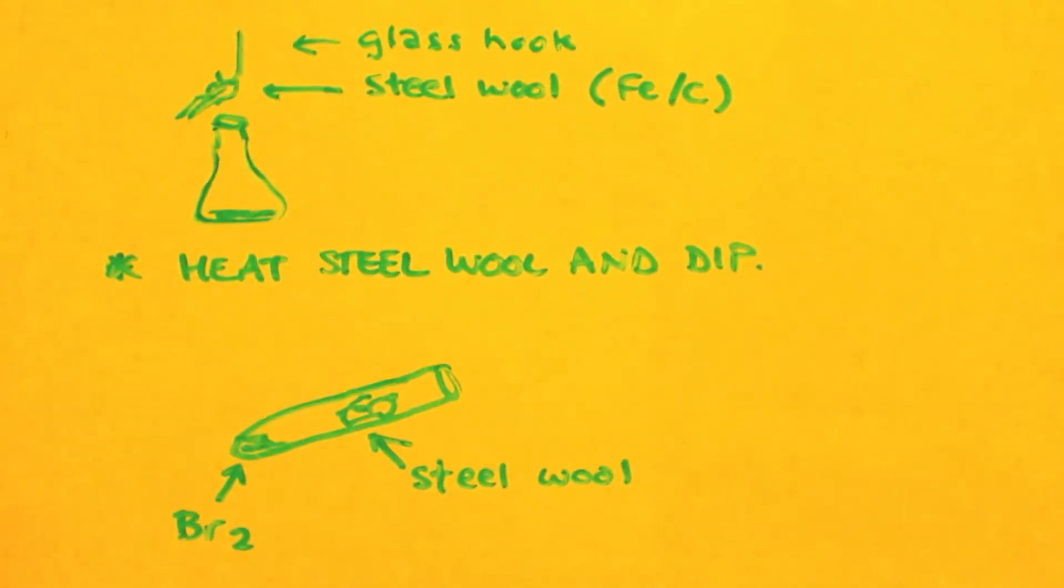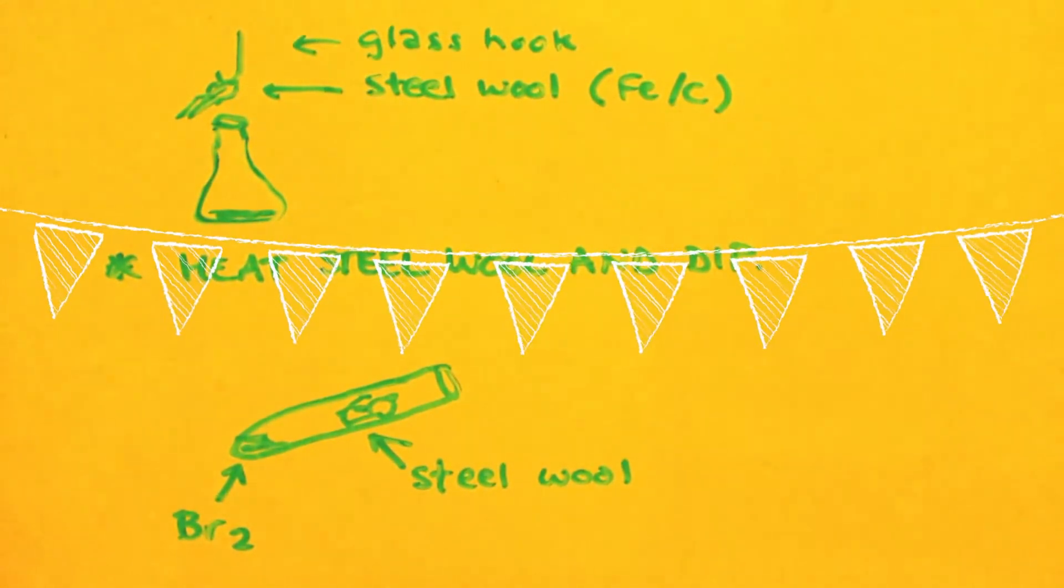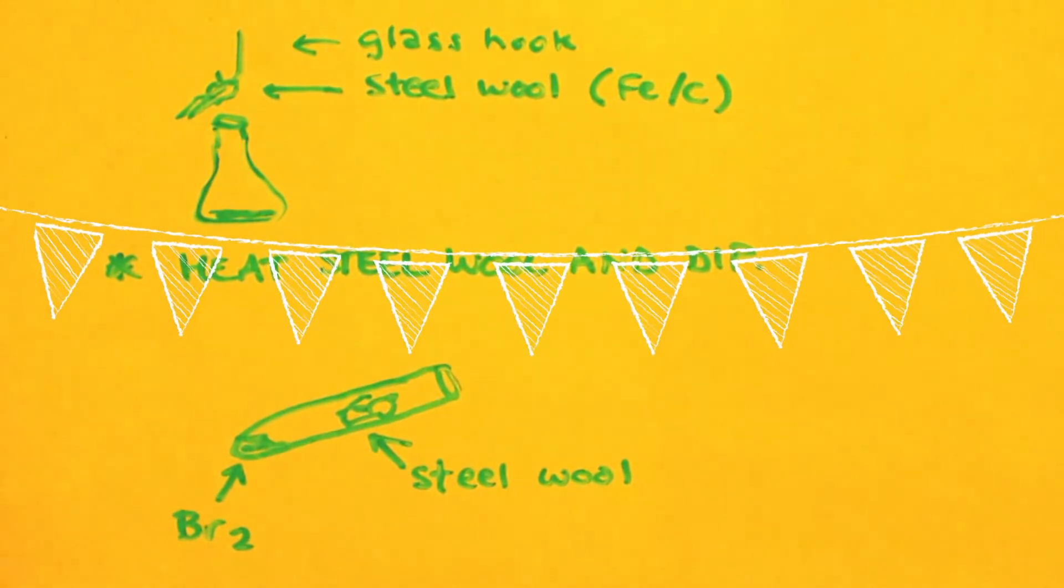Whereas you can pour that out, not pour it out because you don't want the bromine touching it. But you can scrape that steel wool out and just use the steel wool. I mean, it's just iron and carbon, whatever didn't react. Or put it over some paper and try and hit it with a stir rod or something to shake off the iron tribromide. That way you have it anhydrous.